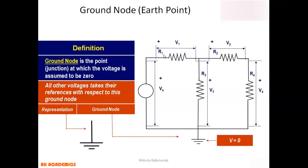This entire bar, if you circle it from top to bottom, represents a node. Now, what is a ground node? A ground node is a point at which the voltage is assumed to be zero. All other voltages take their references with respect to this ground node. The symbol used to represent the ground node consists of three horizontal lines — a longer one, a middle one, and a shorter one.